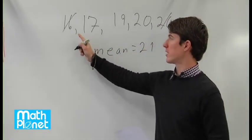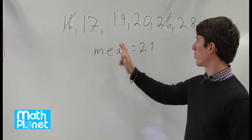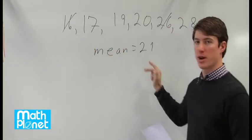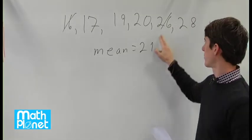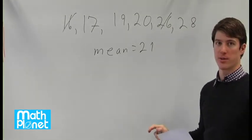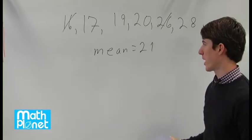So we can guess that 16 and 26 may be removed. If we look at the difference between 16 and our mean, it's 5, and the difference between 26 and our mean, it's also 5. So those are equally spaced apart from the mean, or the average.